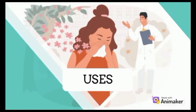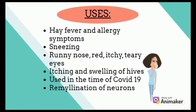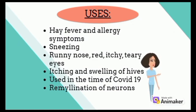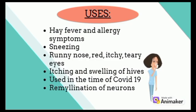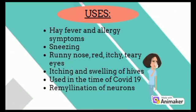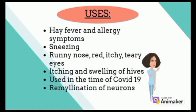Clemastine is mainly used to treat allergic reactions like hay fever, sneezing, and itching due to hives. It was also used during the time of COVID-19 to reduce the symptoms of COVID. Latest research shows that clemastine can be used for remyelination of neurons, and its impact on neuroinflammation and autophagy has also been noted.